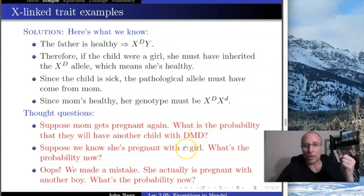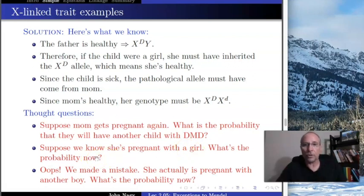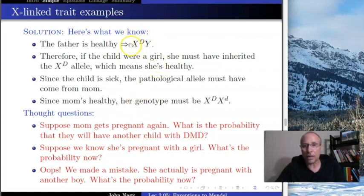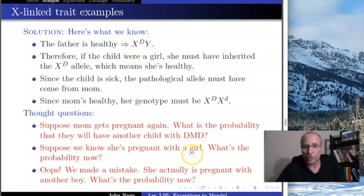But suppose we know she's having a girl. What's the probability now? If we know it's a girl, then we know the father had to have given his X^D, because he must give the X to make a girl. That then indicates the girl is guaranteed to be healthy — so the probability drops to zero.